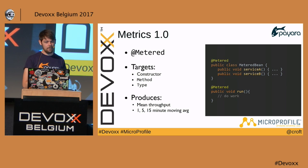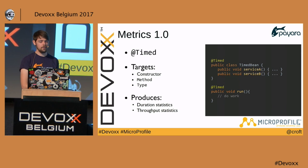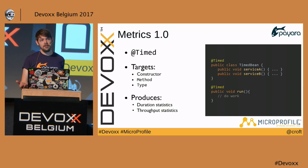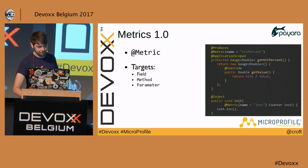@Metered produces mean throughput with one-, five-, and fifteen-minute moving averages. @Timed gives you duration statistics — useful when combined with the Fault Tolerance API, since you might want to measure how long methods take in dev, test, and prod to feed into the timeout value, preventing you from setting the timeout too low.